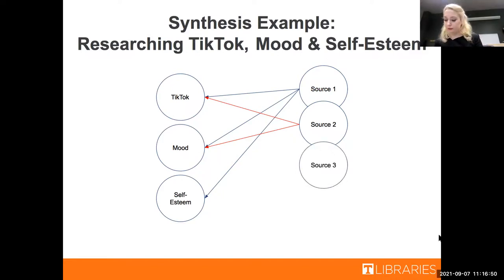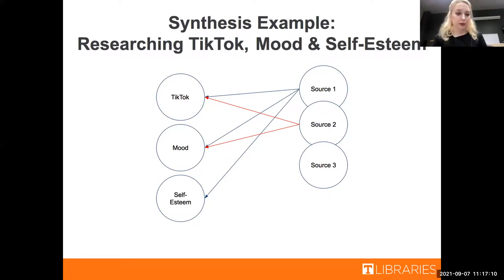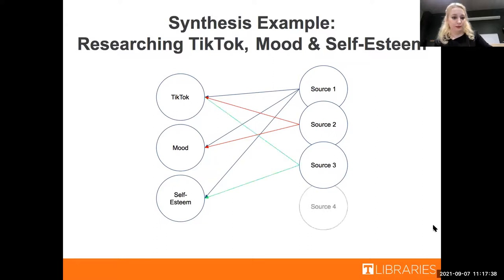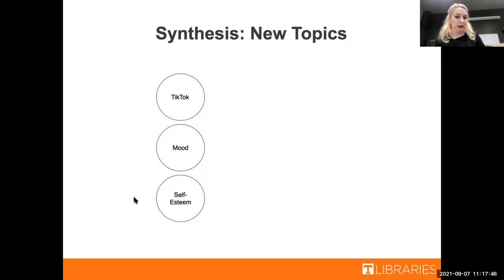Here's where synthesis comes in handy when you're looking for sources. When you can't find sources that talk about all of the elements of your research, start searching for sources that talk about a few or specific elements. You can break your search up into TikTok and mood, TikTok and self-esteem, or mood and self-esteem. From each of these searches, you might end up finding at least one usable source. So now you have a source that talks about TikTok and mood, as indicated by the red arrows; a source that talks about TikTok and self-esteem, as shown by the green arrows; and a source that talks about mood and self-esteem, as shown by the blue arrows.